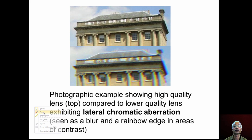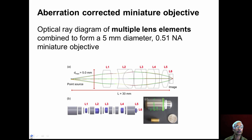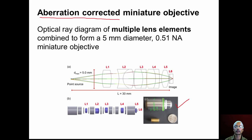Photographic examples show the difference in image quality. A high-quality lens produces a sharp, clear image. In contrast, a blurred image with a rainbow edge results if the lens quality is not proper. By using a series of lenses assembled properly, aberration errors can be corrected. For example, a miniature objective with minimum aberration has a numerical aperture of 0.51 and uses lenses of 5 mm diameter.